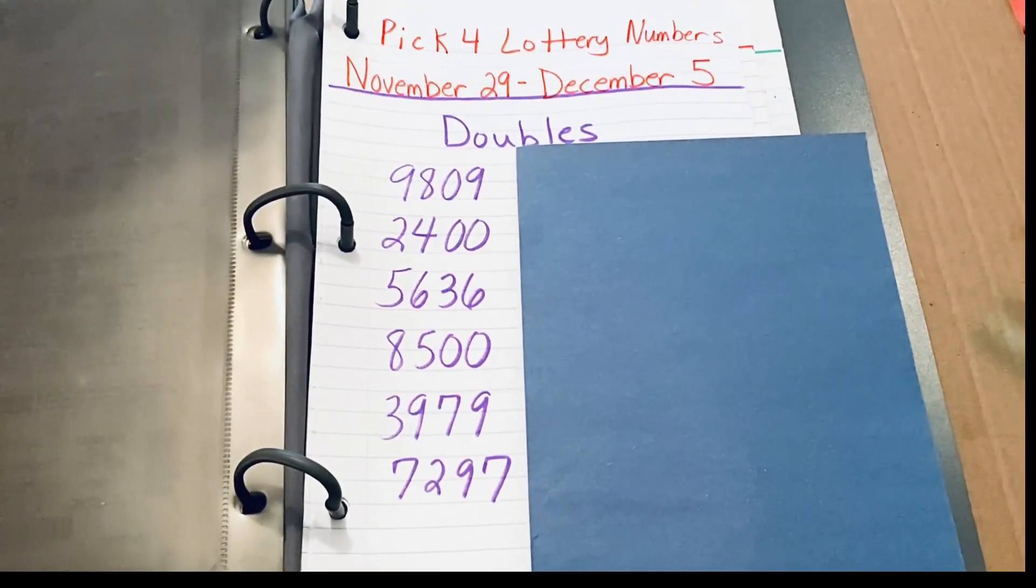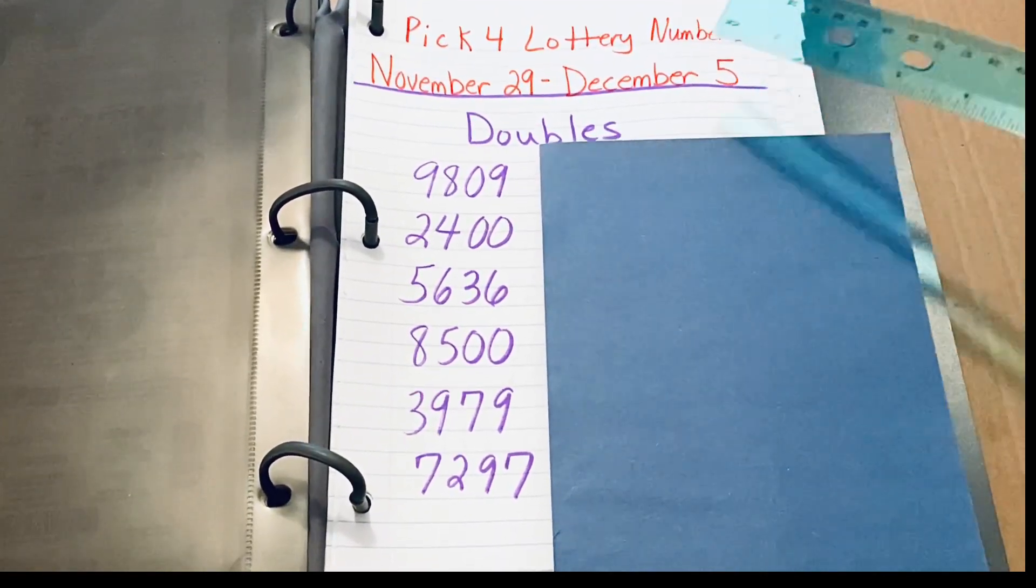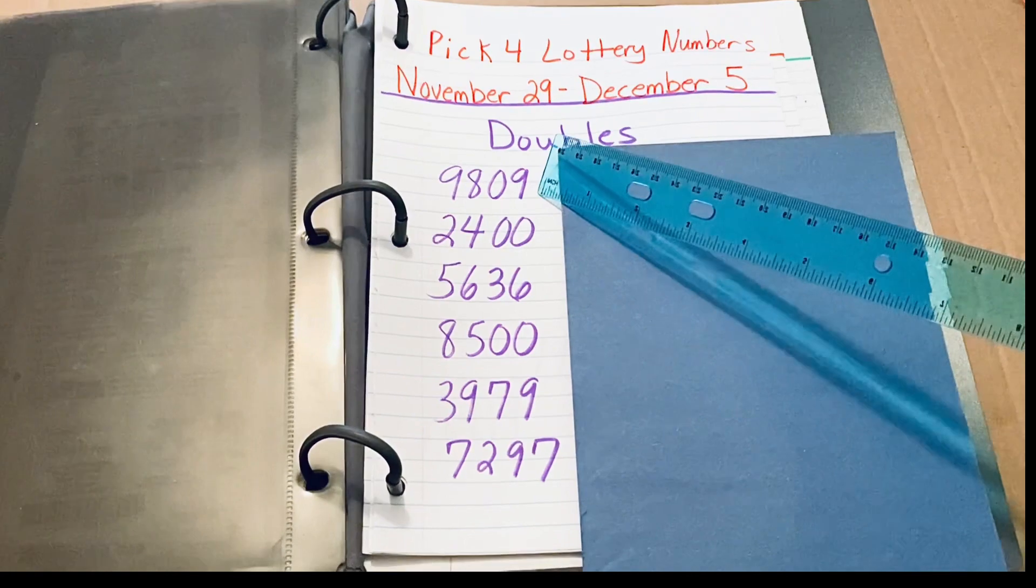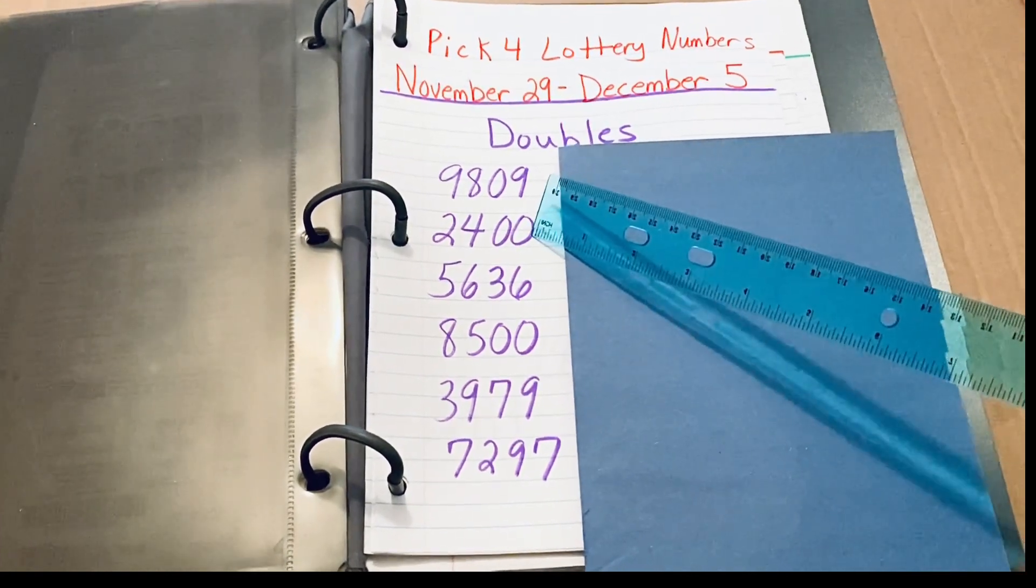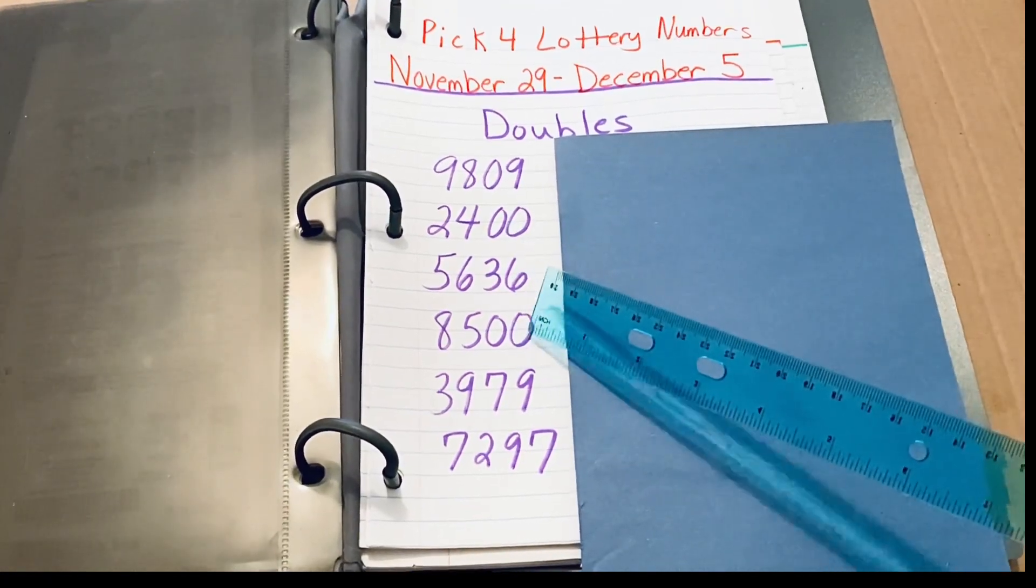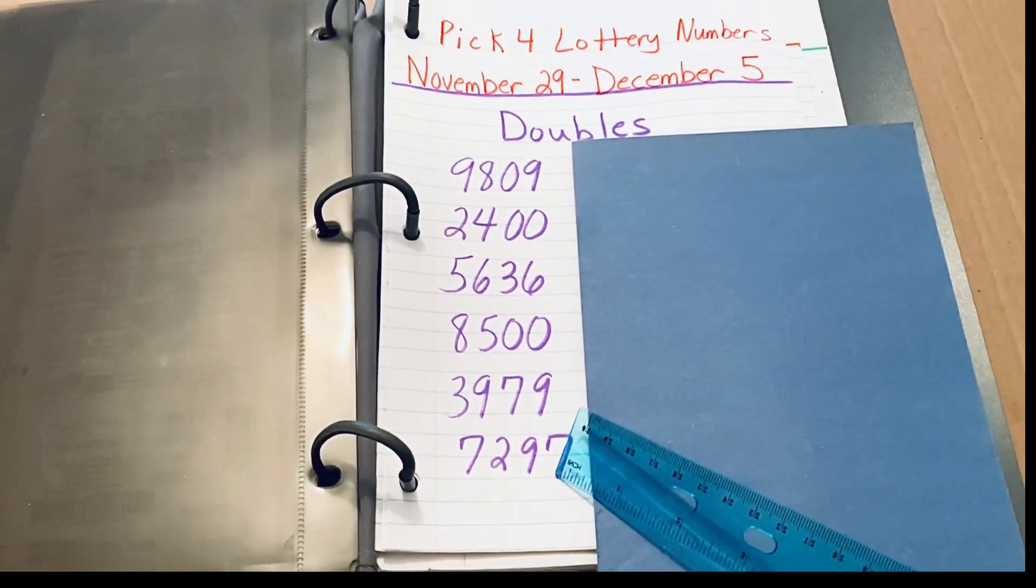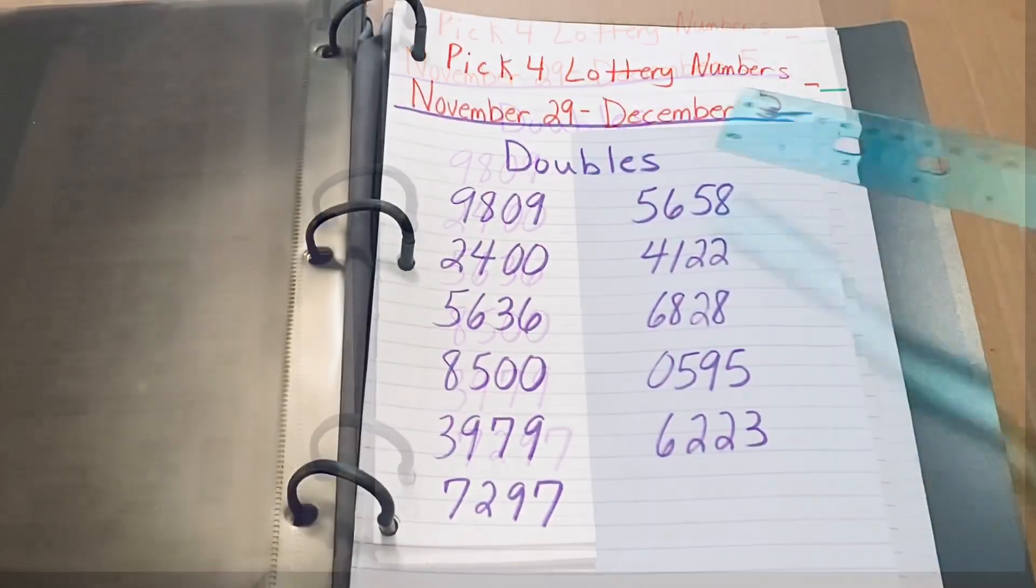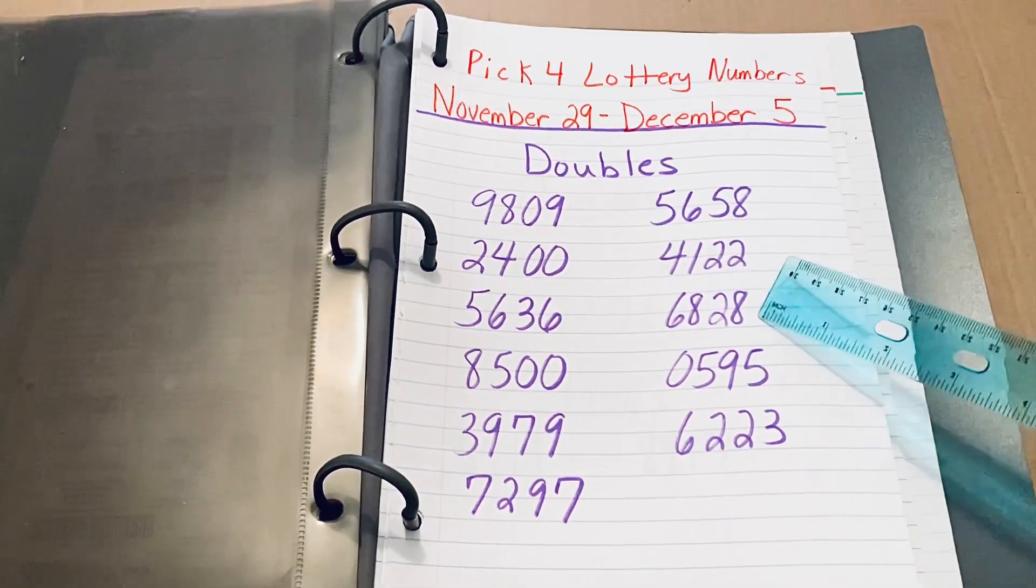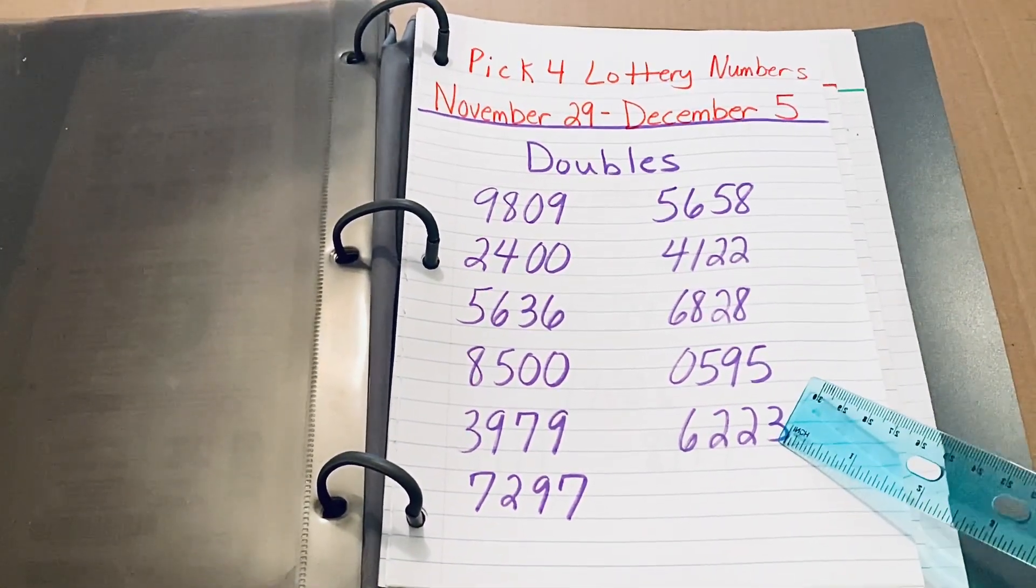I'm excited to share with you the Pick 4 Lottery numbers for the week of November 29th through December 5th. We're starting off with the doubles, first number 9809, 2400, 5636, 8500, 3979, 7297. And moving on to the second column, 5658, 4122, 6828, 0595, 6223.